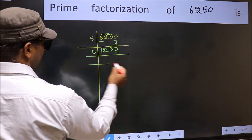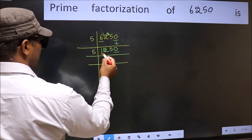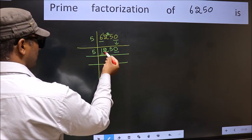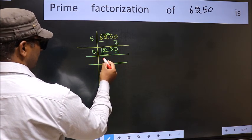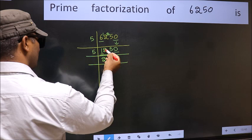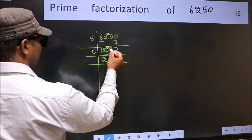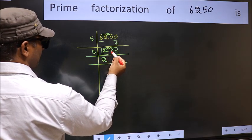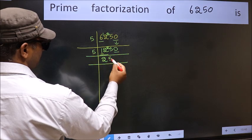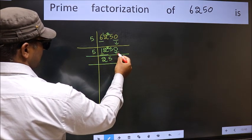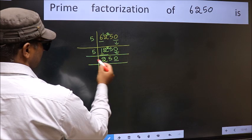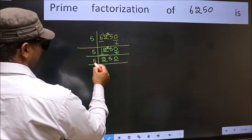Last digit is 0, so take 5. First number is 1, which is smaller than 5, so take two numbers: 12. A number close to 12 in the 5 table is 5×2=10. 12 minus 10 is 2, carried forward. 25 — we get 25 in the 5 table from 5×5=25. Bring the 0 down. Last digit is 0, so take 5.